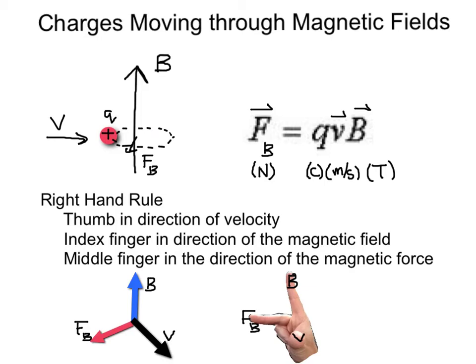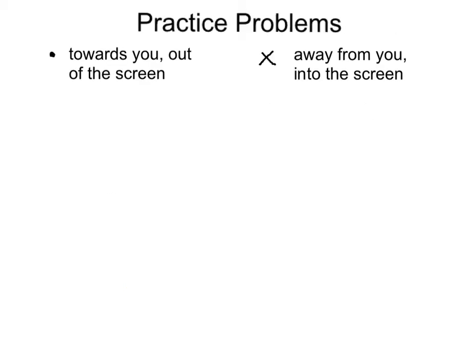Let's try some examples. Before we can do a practice problem, let's take care of some notation. If you see a dot here, this means that the particle or direction of the concept is towards you, or out of the screen. If you see an x, this indicates that the direction of the concept is away from you, or into the screen. Let's try some examples.